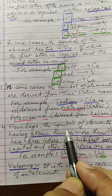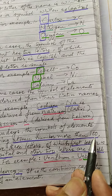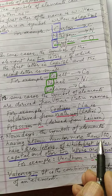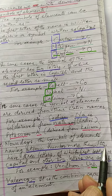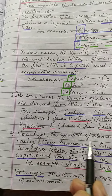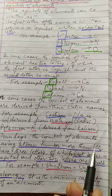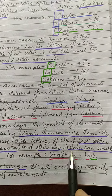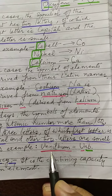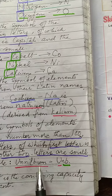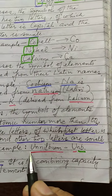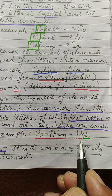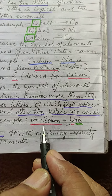Nowadays, the symbols of elements having atomic number more than 100 have three letters. The atomic number, if you remember, is the number of protons in the nucleus of the atom of an element. For elements with atomic number more than 100, the first letter is capital and the other two are small. For example, ununbium is written as capital U, then n, then b — Unb.